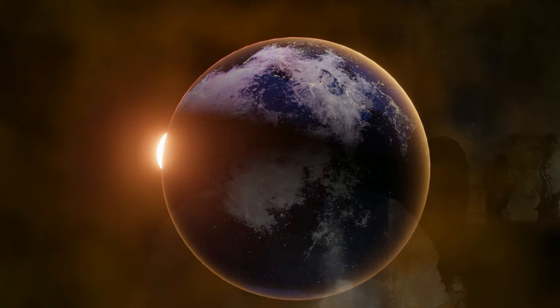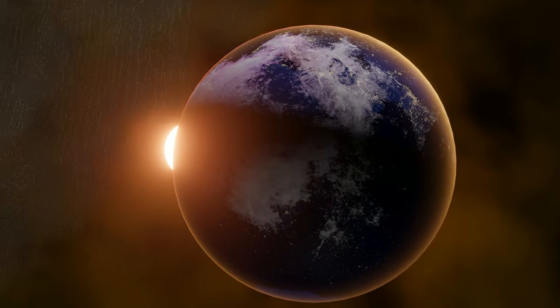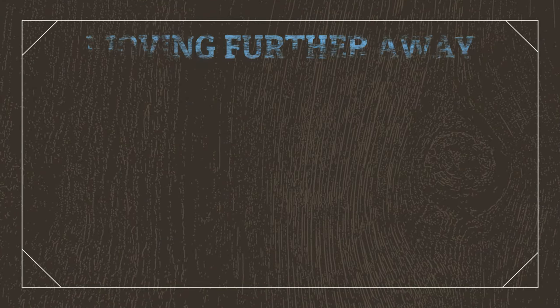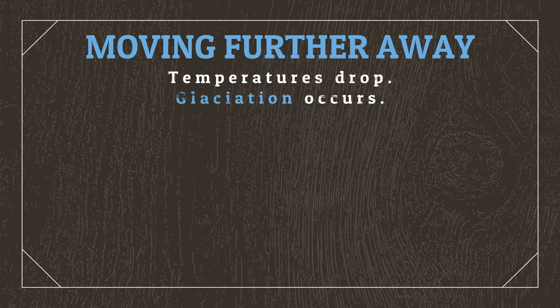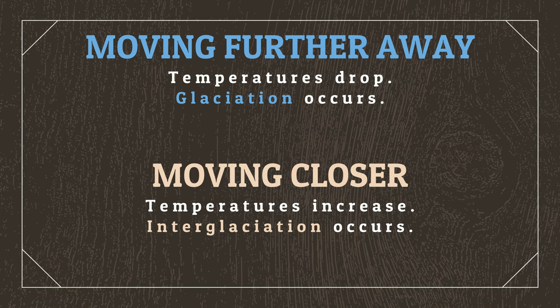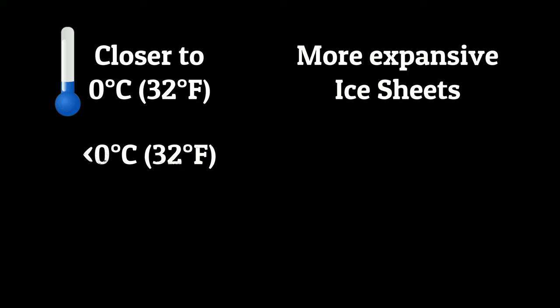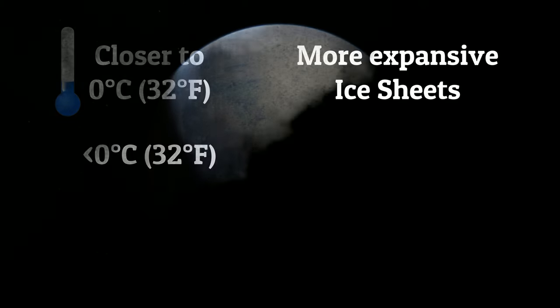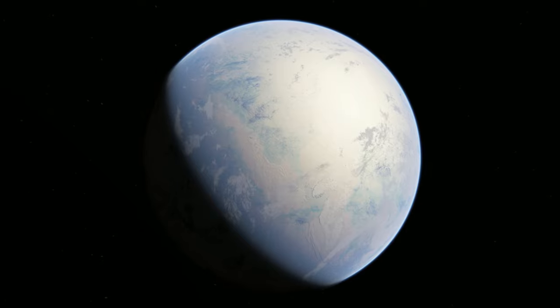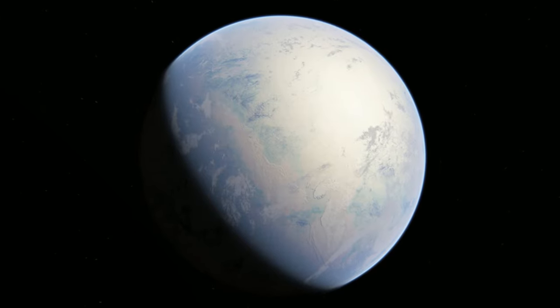There are a number of factors that can cause glaciation and interglaciation, though overwhelmingly the main cause is variation in a planet's movement around its star. Generally speaking, if a planet is trending towards being further away from its star, temperatures will drop and glaciation will occur, while the opposite is true if the planet is trending towards being closer to its star. The closer a planet gets to average surface temperatures being 0 degrees Celsius, the more expansive the ice sheets are. If a planet reaches or drops below 0 degrees Celsius, then a planet with surface water would be considered a snowball planet, with its surface having completely frozen over.